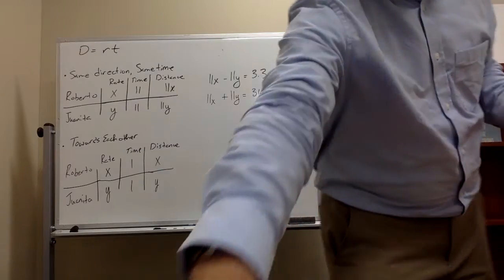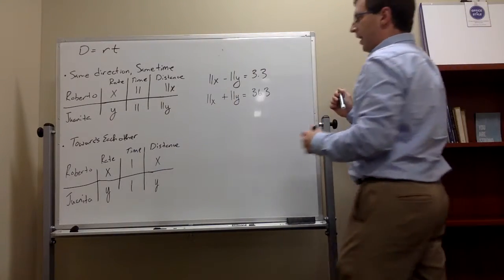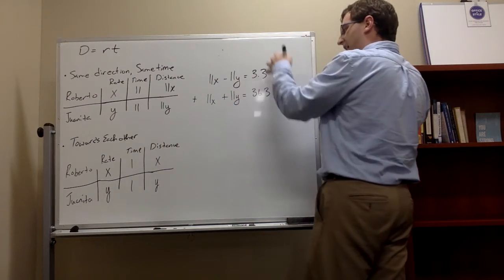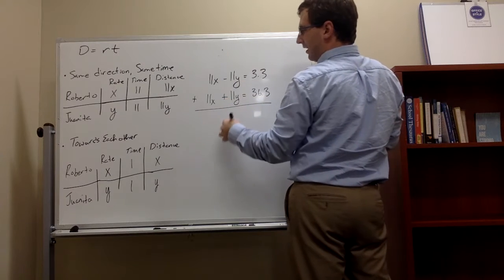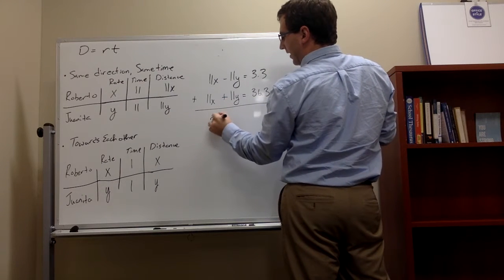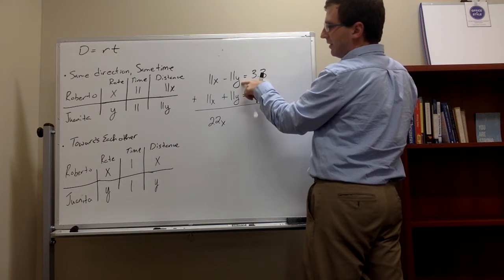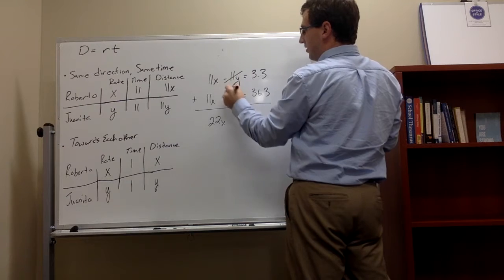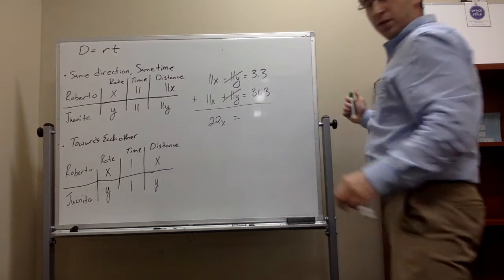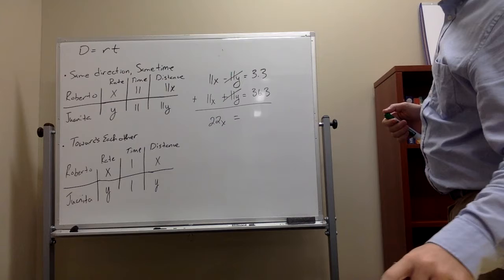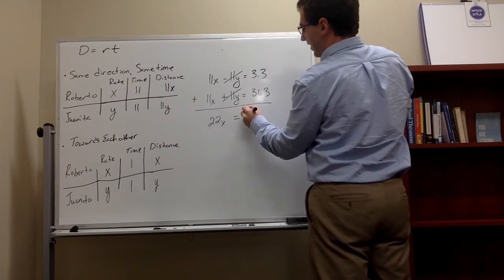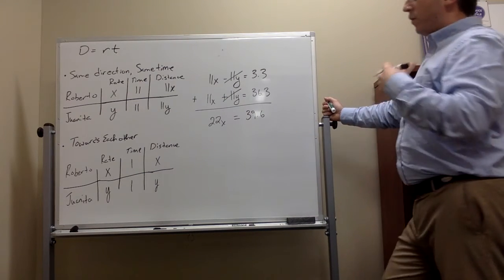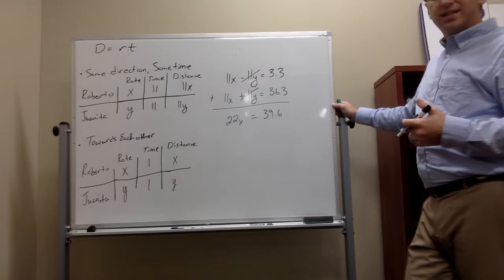So now when I do the elimination method, when I add them up, when I add up my x's, when I add up my y's, and then I add up my numbers, well, 11x plus 11x gives me 22x. Now, here's the cool thing. Negative 11y plus 11y goes to 0. They cancel out. So these guys, I'm not too worried about anymore. 22x equals 36.3 plus 3.3. Well, that gives me 39.6. So now we have 22x equals 39.6.